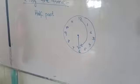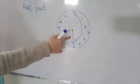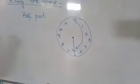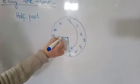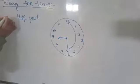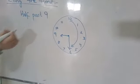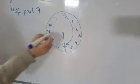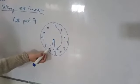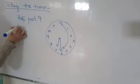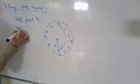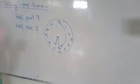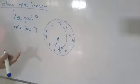In half past, the long hand, that is our minute hand, is always on six. Now we can check the small hand, that is our hour hand. If it is on nine, then it is half past nine. And if it is on seven, then this is half past seven.